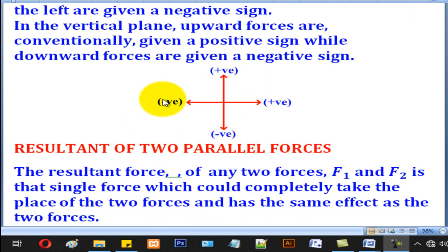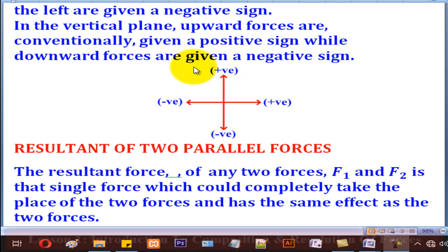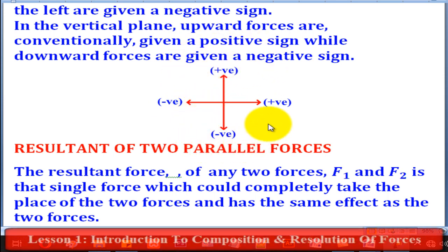Conventionally, for the horizontal part, forces to the right are given a positive sign, while those to the left are given a negative sign. And vertically, forces upwards are given a positive sign, and those downwards are given a negative sign.